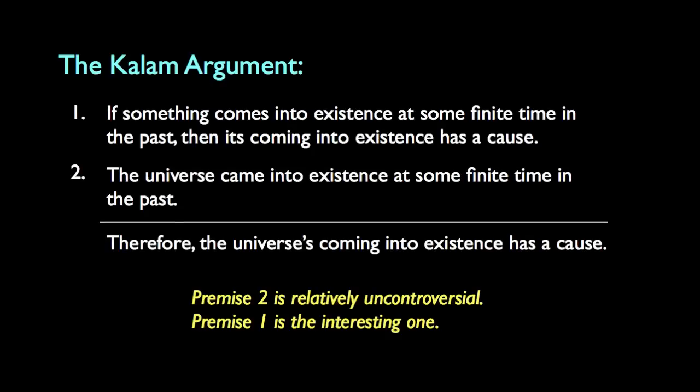Premise two is a relatively uncontroversial claim. It's central to the Big Bang model of cosmology, which has almost universal support among cosmologists. There is overwhelming evidence that the universe originated in a very hot, very dense state at some finite time in the past — between 13 and 14 billion years ago — and that it's been expanding and cooling ever since. The interesting premise is the first one, which states a general metaphysical principle: if a thing comes into existence, then it must have a cause.